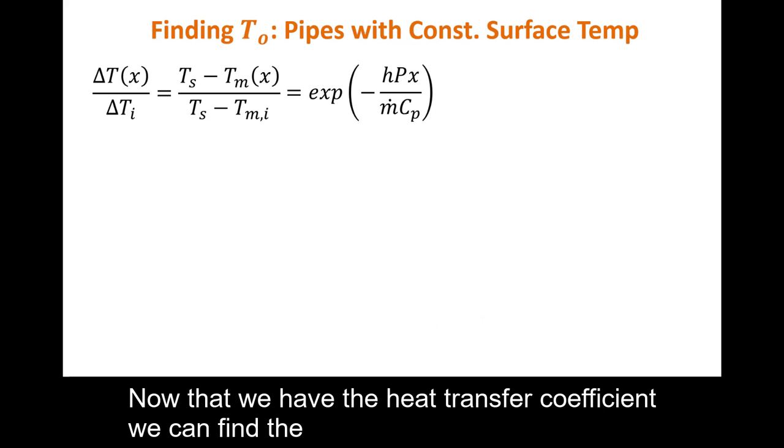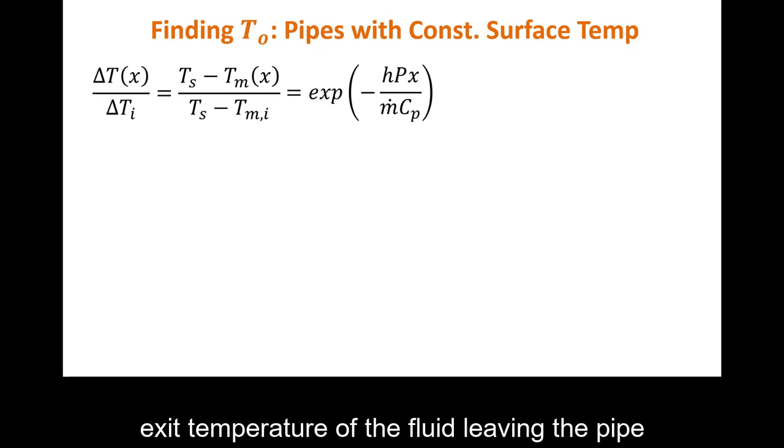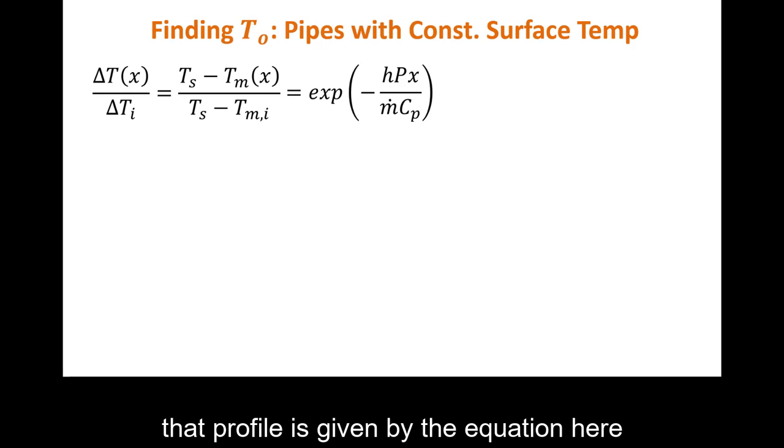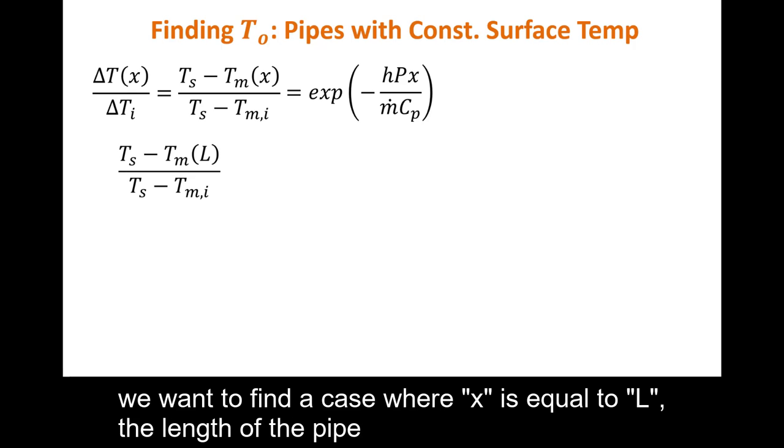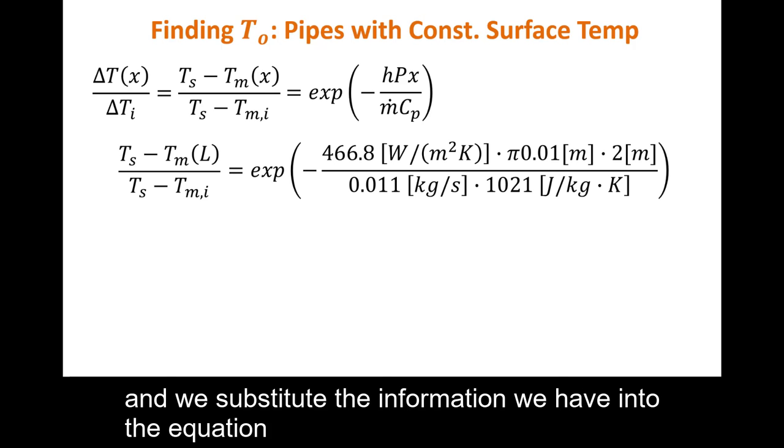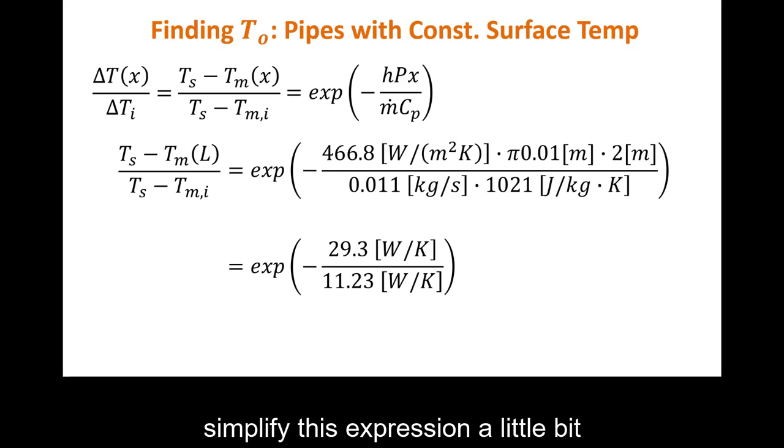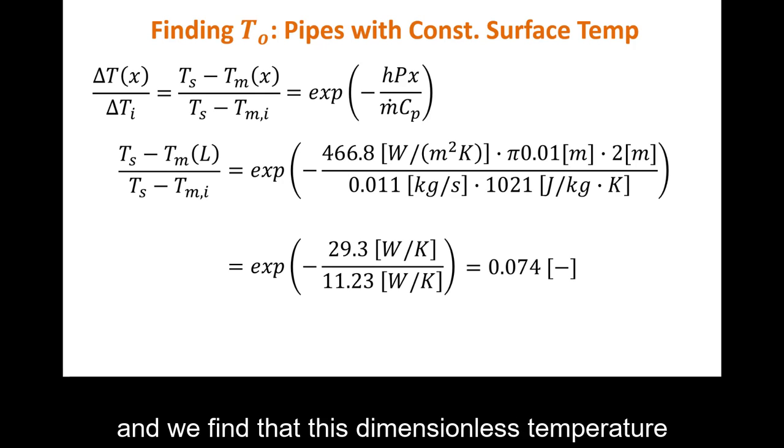Now that we have the heat transfer coefficient, we can find the exit temperature of the fluid leaving the pipe. We know that the temperature has a particular profile in pipes with a constant surface temperature. That profile is given by the equation here. We want to find a case where x is equal to L, the length of the pipe. And we substitute the information we have into the equation. We put some numbers into our calculator. Simplify this expression a little bit. And we find that this dimensionless temperature given on the left of the equation is equal to 0.074.